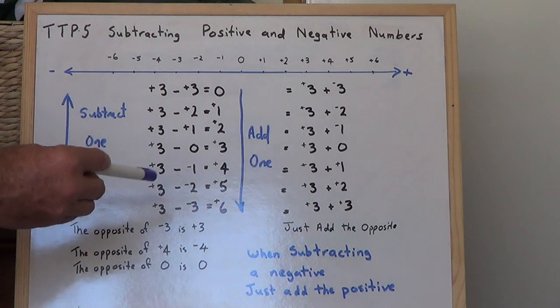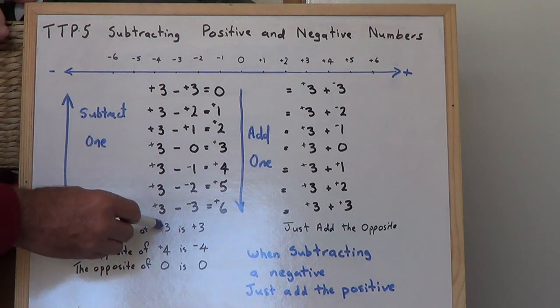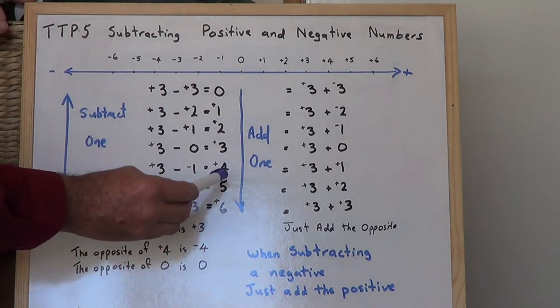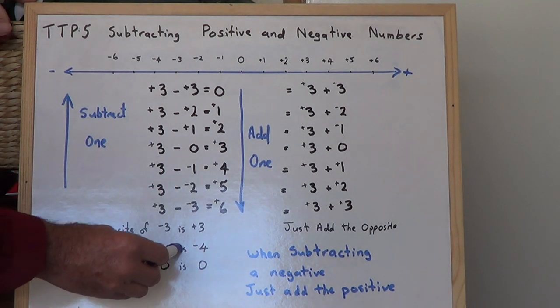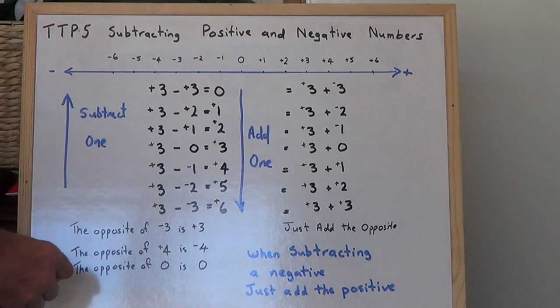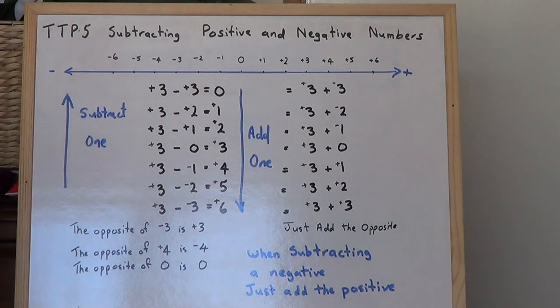Here's the idea of an opposite. The opposite of negative 3 is 3. The opposite of 4 is negative 4, and the opposite of 0 is 0.